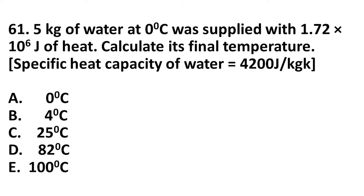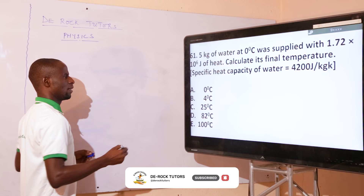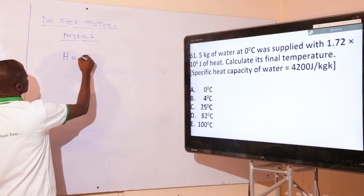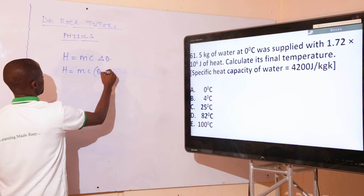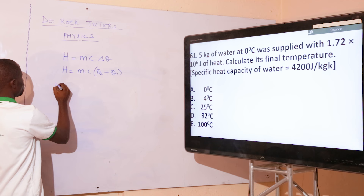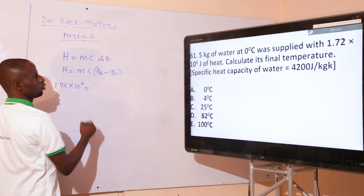Please ensure you subscribe, like, and share our video. The next question: 5 kg of water at zero degrees Celsius was supplied with 1.72 times 10 to the power 6 joules of heat. Calculate its final temperature, given that the specific heat capacity of water is 4200 joules per kilogram per Kelvin. The formula for this problem is: heat is given by mc times change in temperature, so H equals mc(θ₂ minus θ₁).